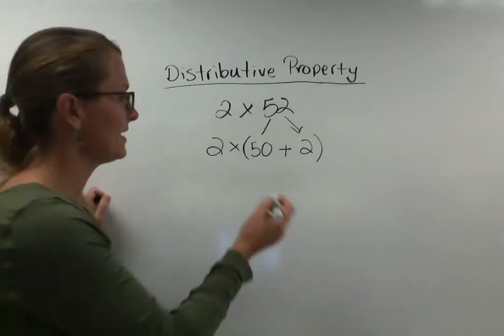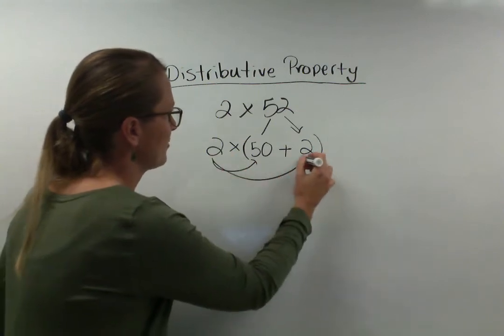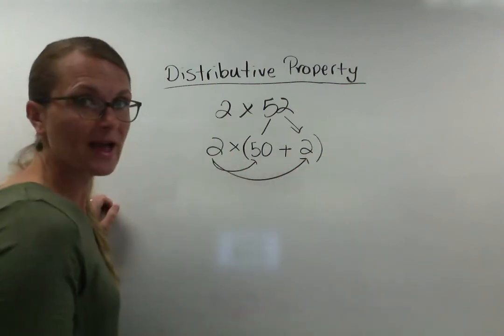What I did in my head is I did this. I multiplied the 2 times the 50 and I multiplied the 2 times the 2 and I added it back together.